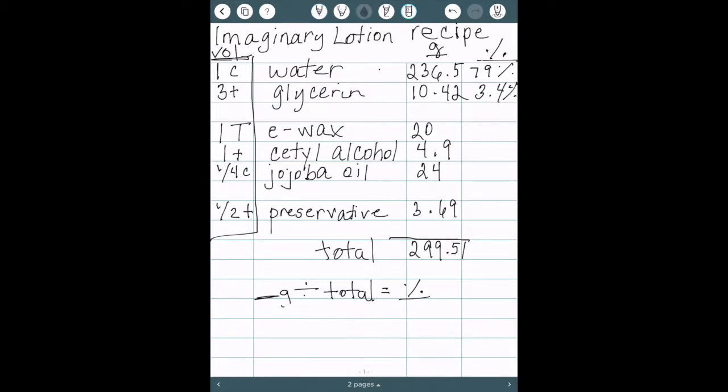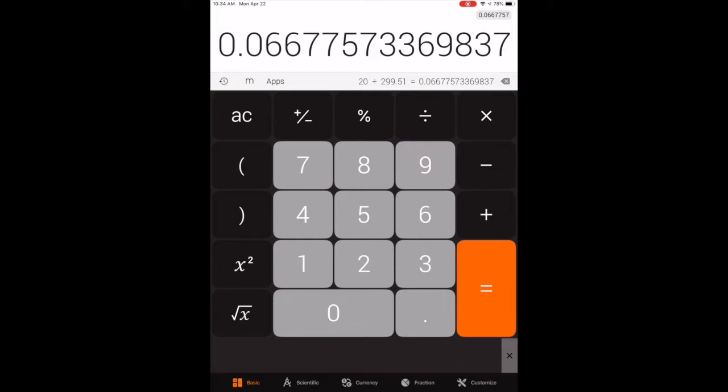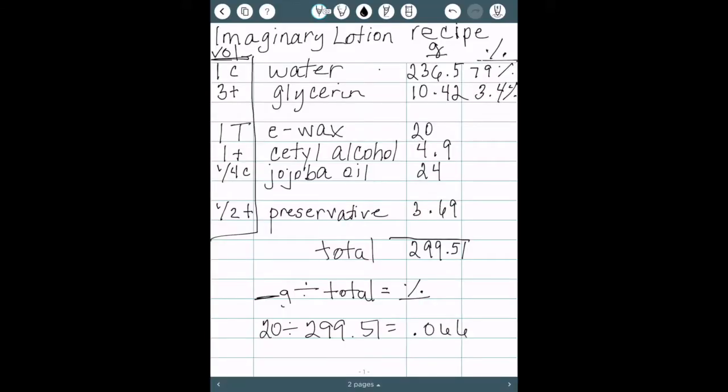I'm going to go through one more to just make sure that there's no questions. Our emulsifying wax, 20 grams divided by the total 299.51 equals 0.066. Move the decimal to the right two places and that is 6.6 percent. So go through your entire formula that way. Every single ingredient and come up with your percentages.